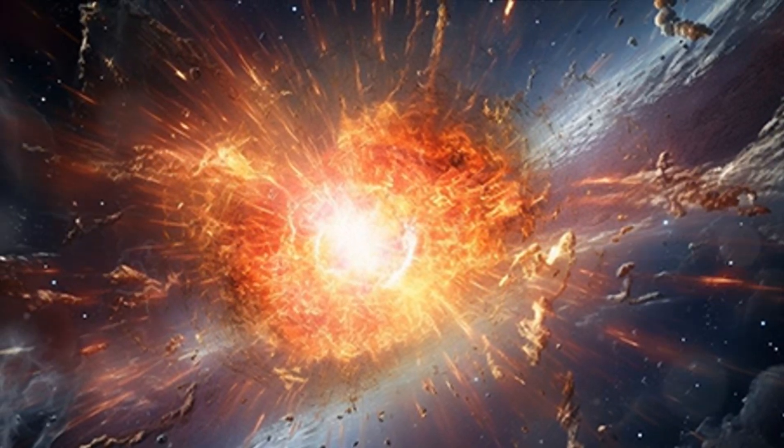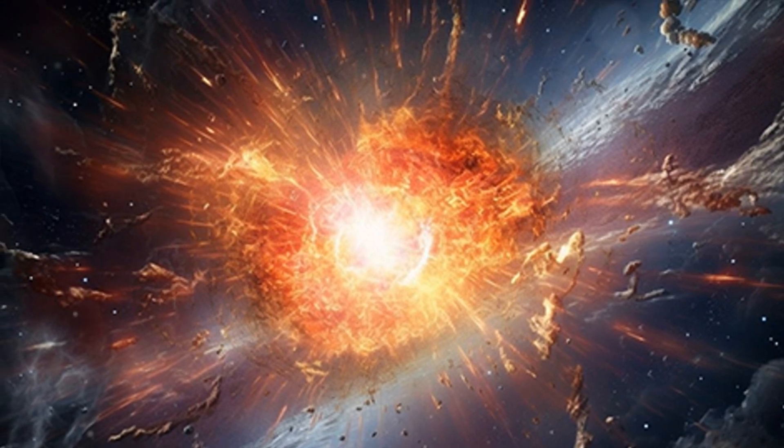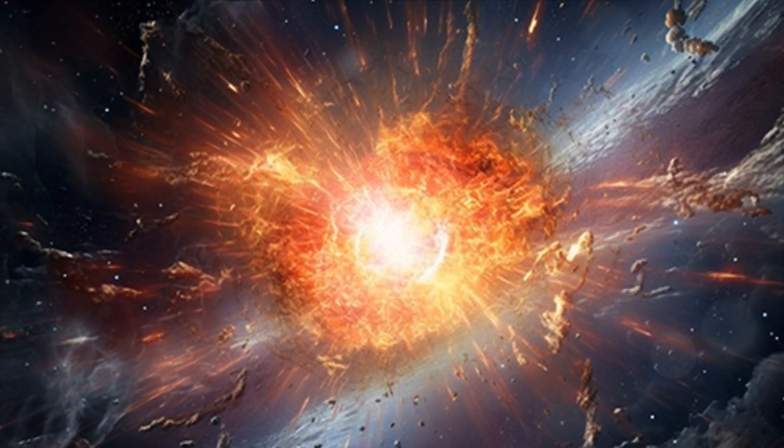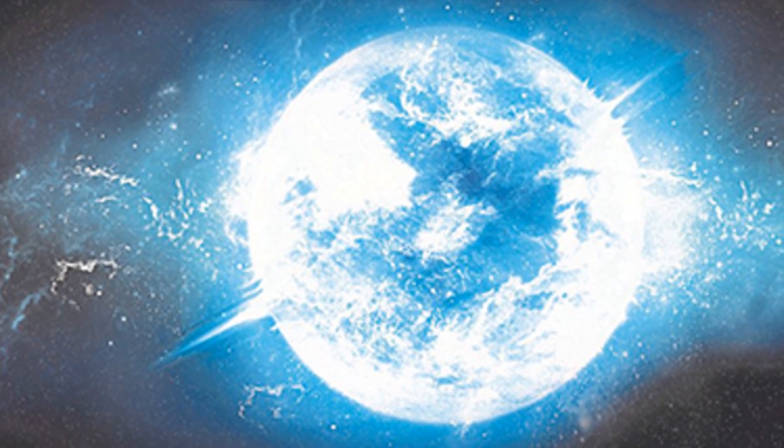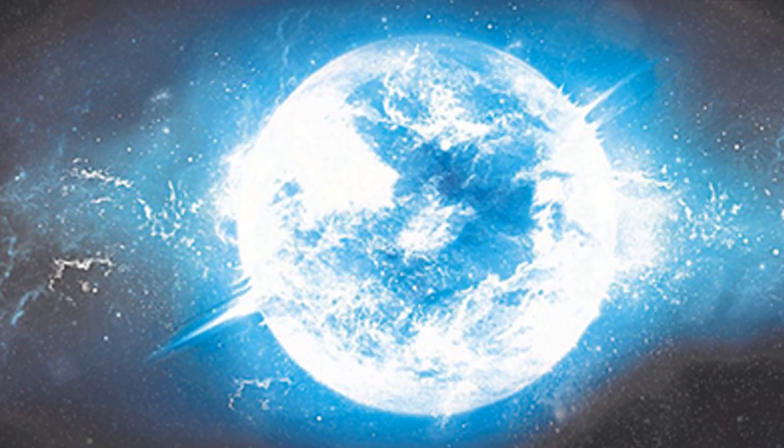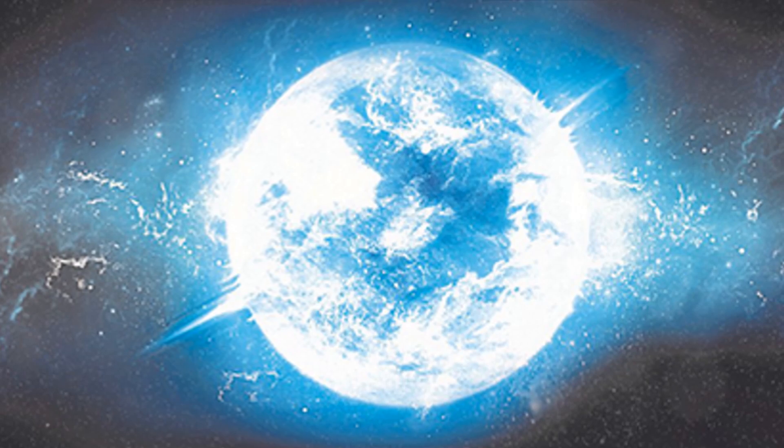As a star exhausts its hydrogen supply, its life takes a dramatic turn. It expands into a red giant, and eventually its outer layers are expelled, leaving behind a white dwarf. If the star was massive enough, it might undergo a supernova explosion and leave behind a neutron star or a black hole.